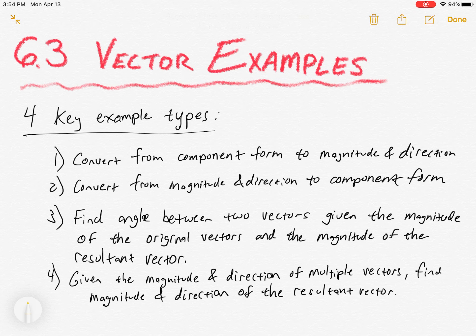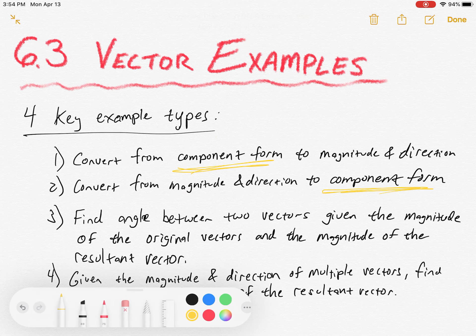Welcome back to pre-calculus. We're going to go over some vector examples and I've broken it down to four key example types. Number one, converting from component form to magnitude and direction. Number two, converting from magnitude and direction to component form — so this is going back and forth.